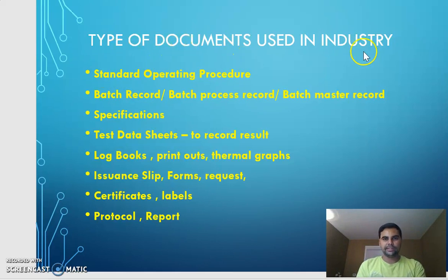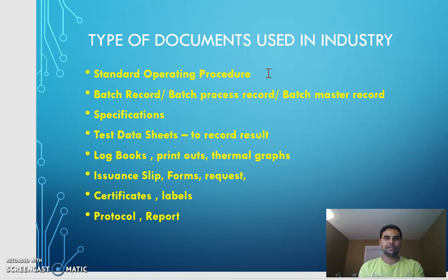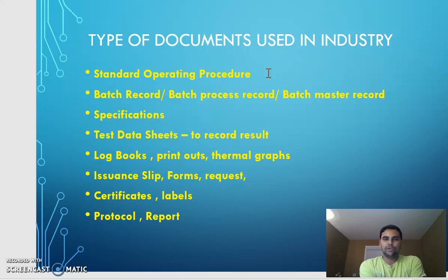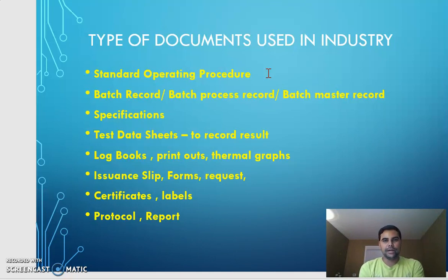In any life science industry, we have document types such as standard operating procedure, which guides us on performing any single operation. Even if a company has a manual calculator, there has to be a standard operating procedure for the same. You need not have any prior knowledge to perform a job — you just go there, pick up the set of instructions written and approved by the quality department, and perform the operation.